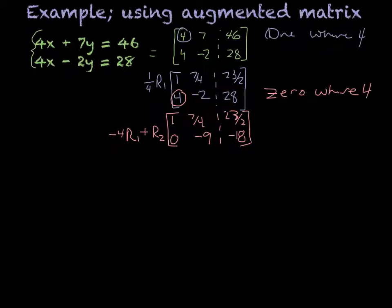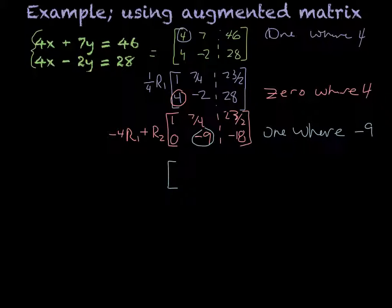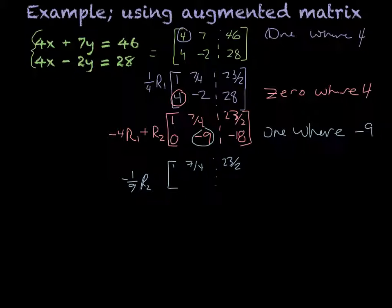Now I have a 1 and a 0. My next step is going to be to get a 1 where the negative 9 is, because that's the next place where I need a 1 for my identity matrix. Similar to the first step, we're going to multiply by negative 1/9 times row 2. That gives me: first row not changing — 1, 7/4, 23/2 — and then 0, because 0 divided by 9 is 0. Negative 9 divided by negative 9 is 1, and negative 18 divided by negative 9 is positive 2.